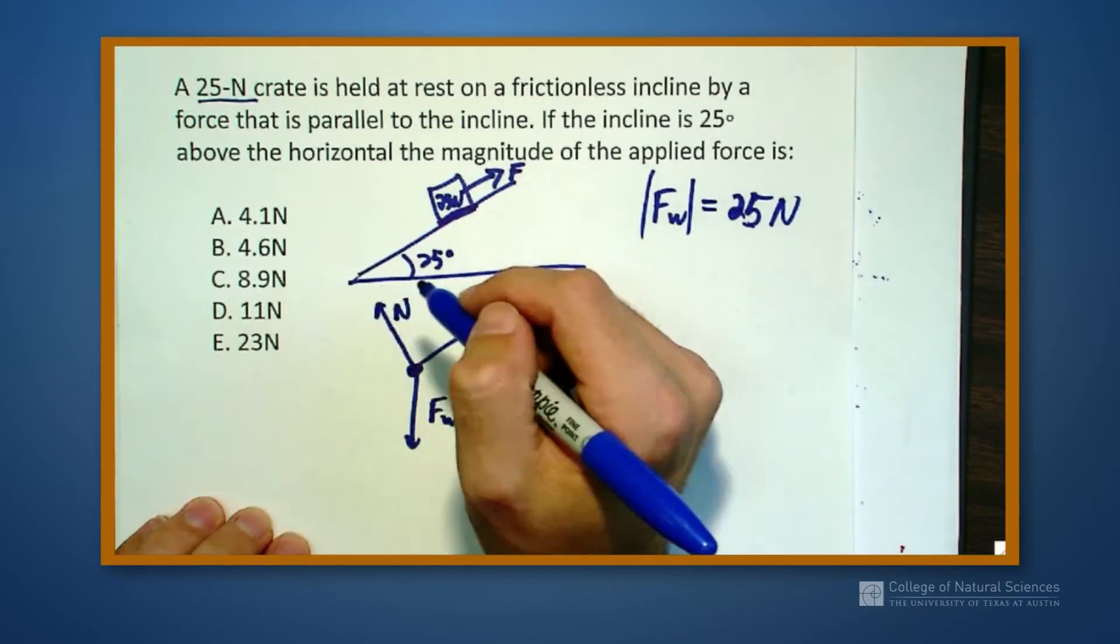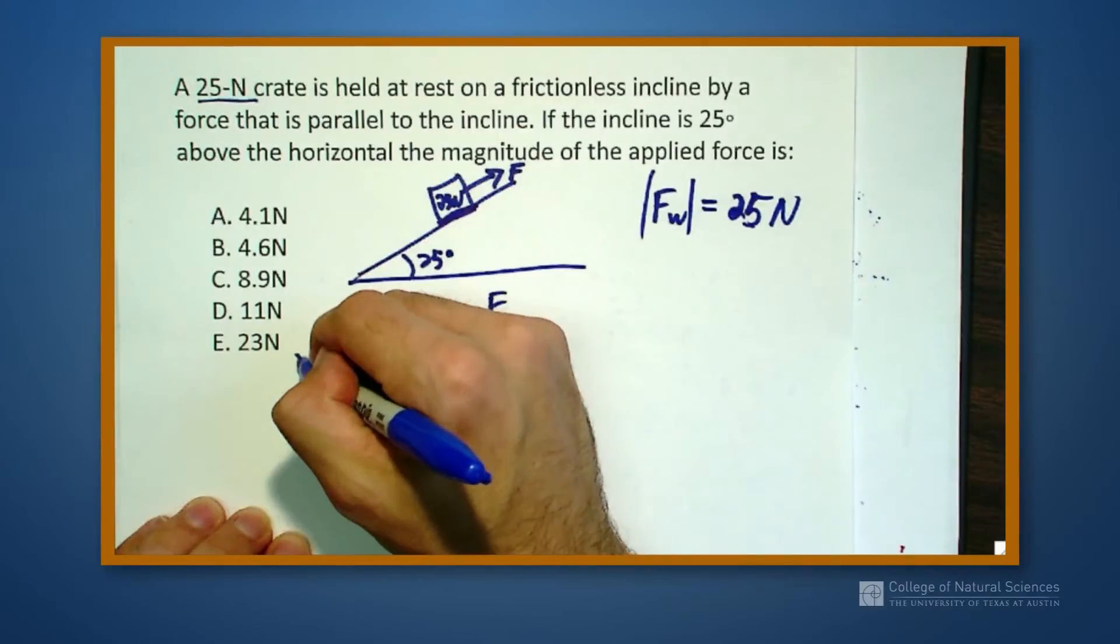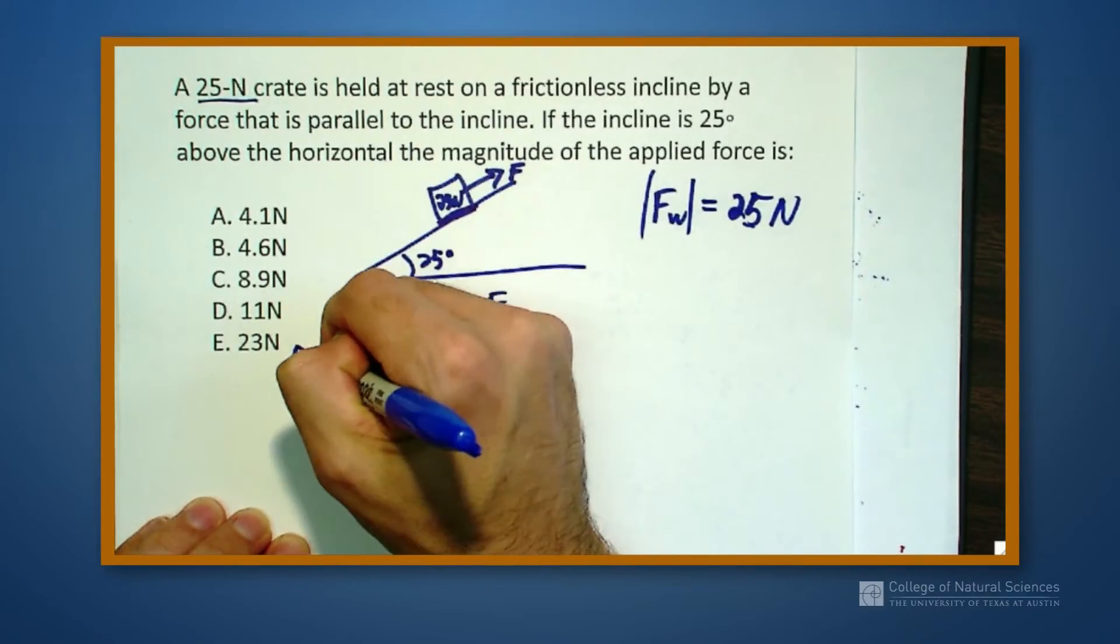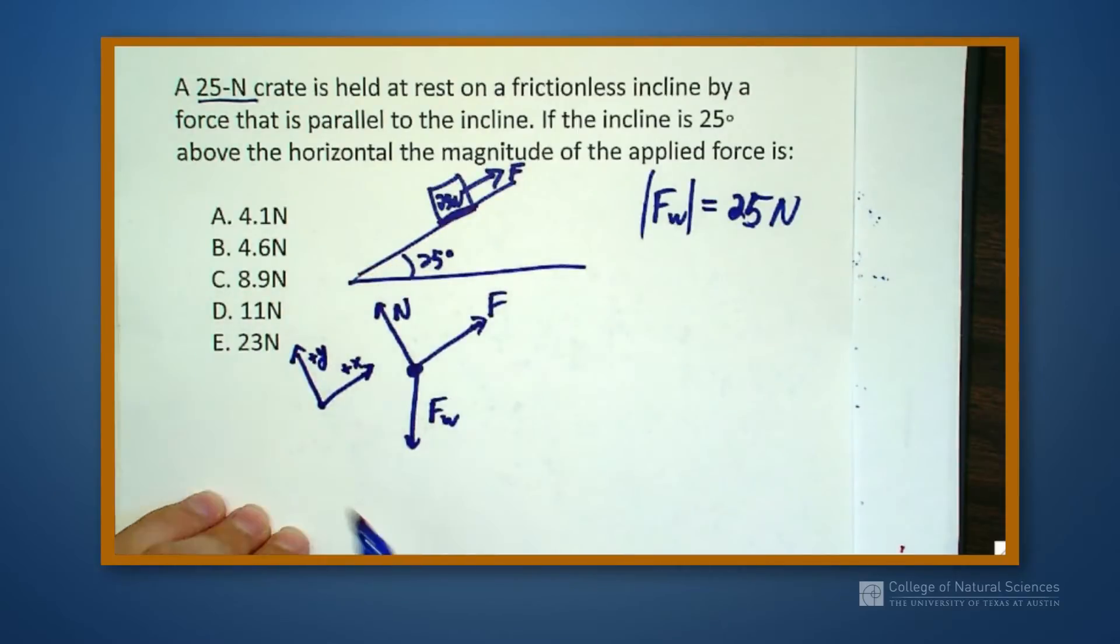So now I'm going to draw a coordinate system. I'm going to draw a coordinate system that has positive x up the ramp and positive y perpendicular to the ramp. If you haven't seen these problems before, where you have ramp problems, a lot of times a good choice of coordinate systems is up the ramp is being one direction, off the ramp, perpendicular to the ramp. The other one will be a good perpendicular coordinate to that first one.